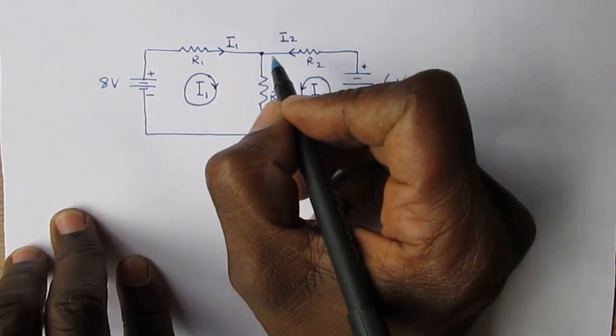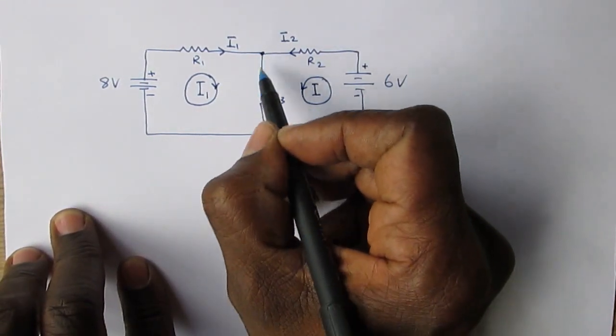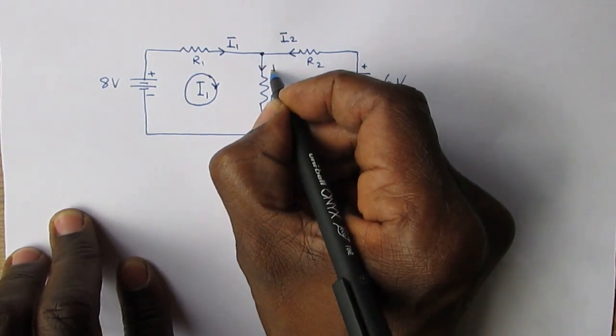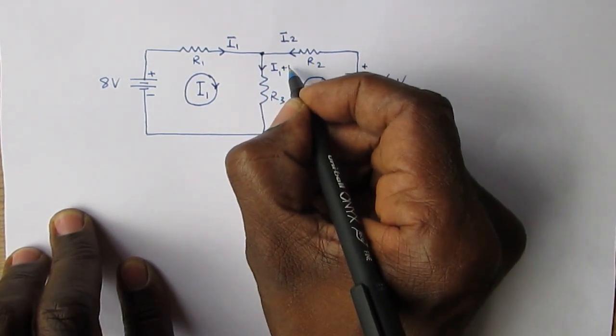According to Kirchhoff's current law, the current leaving this node must equal the currents entering, so the current flowing through here will be I1 plus I2.